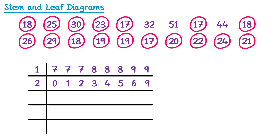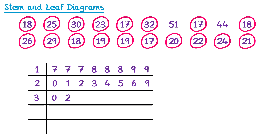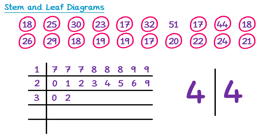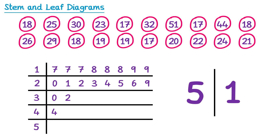The next smallest number is 30, which has a stem of 3 and a leaf of 0, so we start a new row with stem 3 and place a 0. Then 32 — stem 3, leaf 2. Then the next number is 44, with a stem of 4 and a leaf of 4, so we start a new row with stem 4. Finally, 51 has a stem of 5 and a leaf of 1, so we start one more new row.